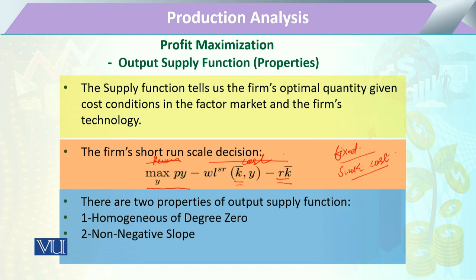This equation must follow two properties of the output supply function. The first property is that the output supply function will be homogeneous of degree 0, and the second property is that it will be non-negative in slope.